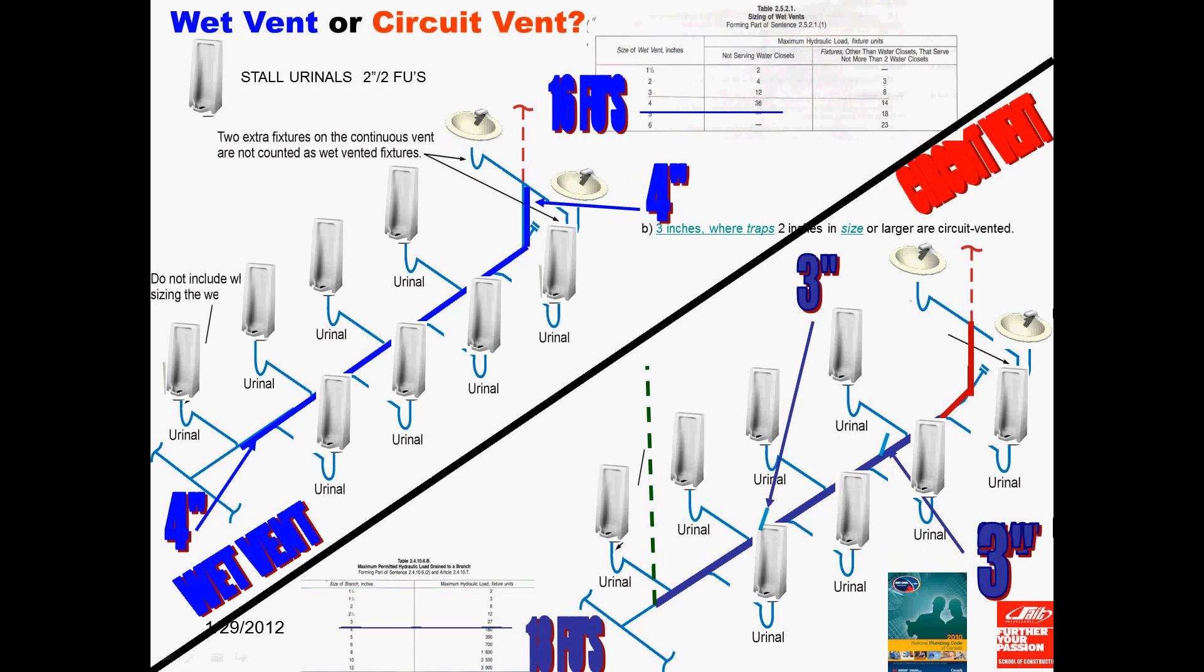Now, let's size the circuit vent above the circuit vented branch. And we will see that it also has to be 3 inches, because that clean out is serving a 3 inch pipe. And clean outs must be as big as the pipe, or as large as the pipe they serve. Now, I want to actually size the vertical red solid line above the clean out. This is the wet portion of the circuit vented, of the actual circuit vent.